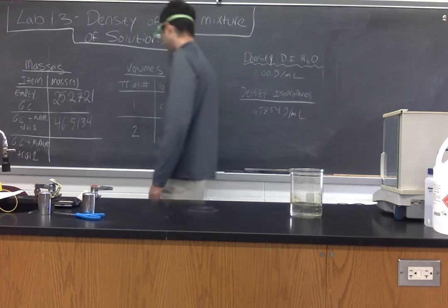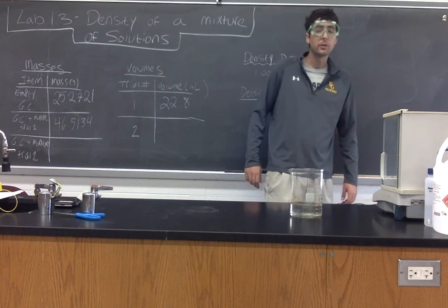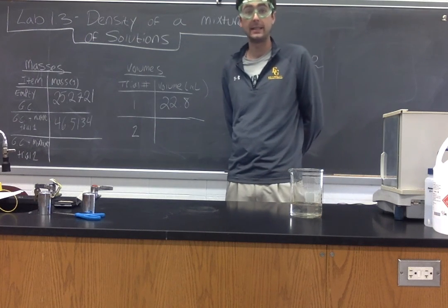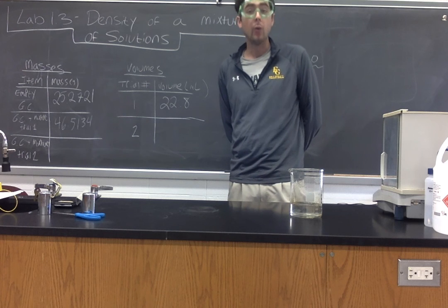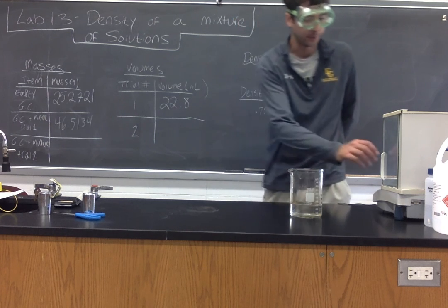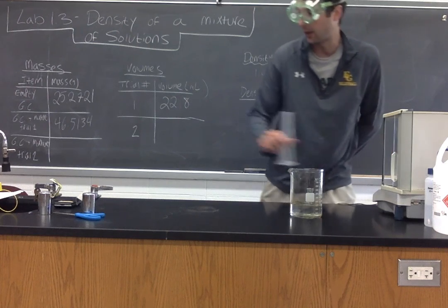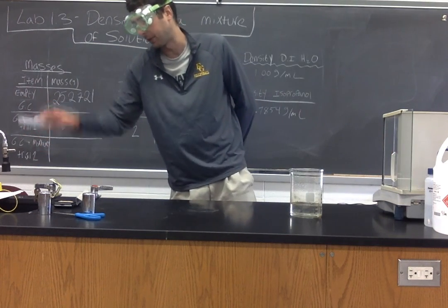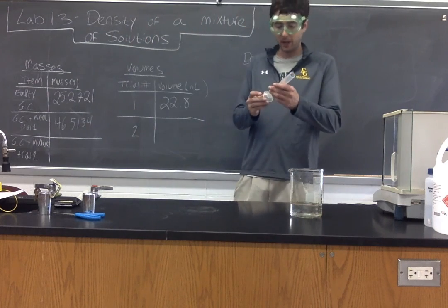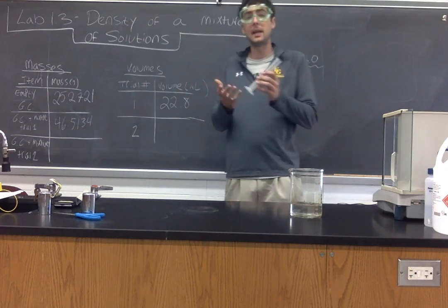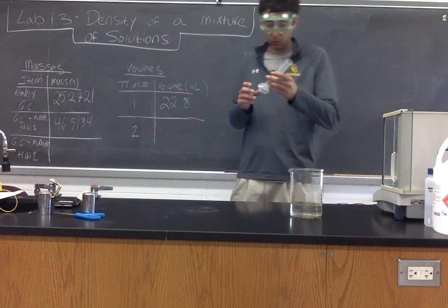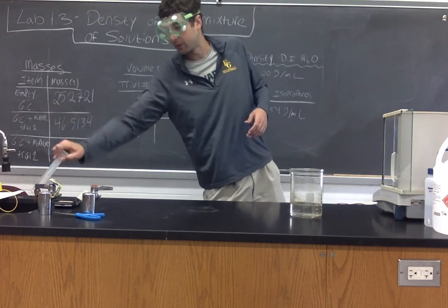At this point I'm going to take the mass again. 46.5134 grams. So at this point we are done with trial one. We have enough information to find the density of our mixture. We are going to run a second trial with a different volume. So I'm using the same graduated cylinder. I do not need to mass the empty graduated cylinder again for a couple of reasons.